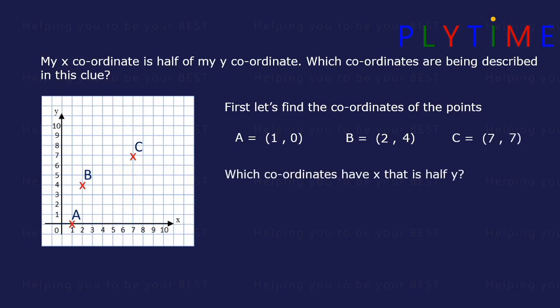Which coordinates have an x that is half of y? Remember the coordinates are always written x, then y. It's B, 2, and 4.